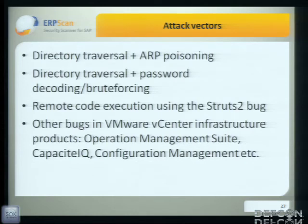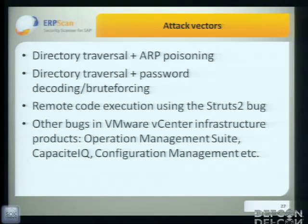So there are four vectors to attack vCenter: directory traversal with ARP poisoning; directory traversal with password decoding; and remote code execution using the Struts bug. Also, there are a lot of vCenter infrastructure products — like operations management suite, capacity tech, and configuration management — and they all have some sort of credentials for vCenter. So there may be additional vulnerabilities in those systems.